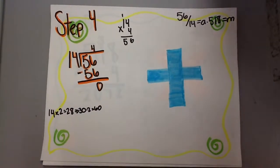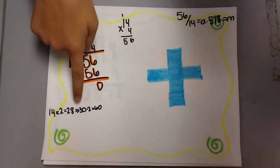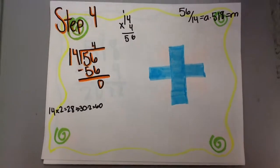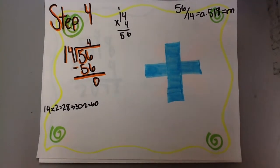Because we know 14 times 2 is 28, and we round 28 to 30, then multiply 30 times 2, which we know is 60, then we conclude that 14 times 4 is 56.